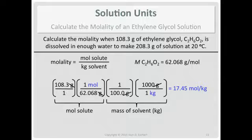17.45 moles per kilogram—that's the preferred way to write it. You still see this quite often written with a lowercase m. If you're going to use the m, do not use capital M, because capital M is molarity.